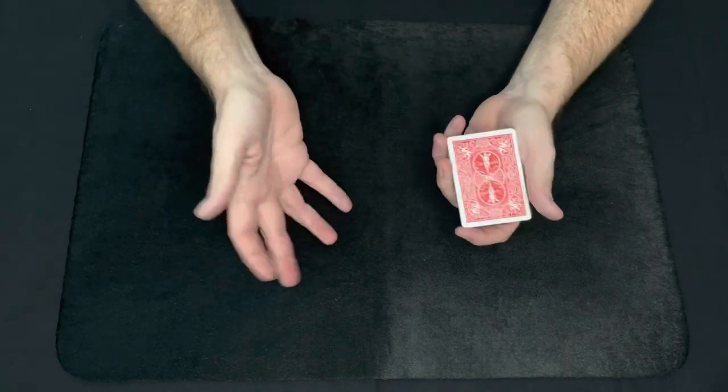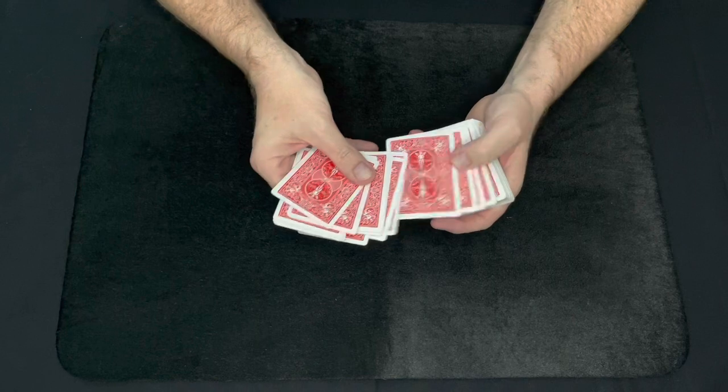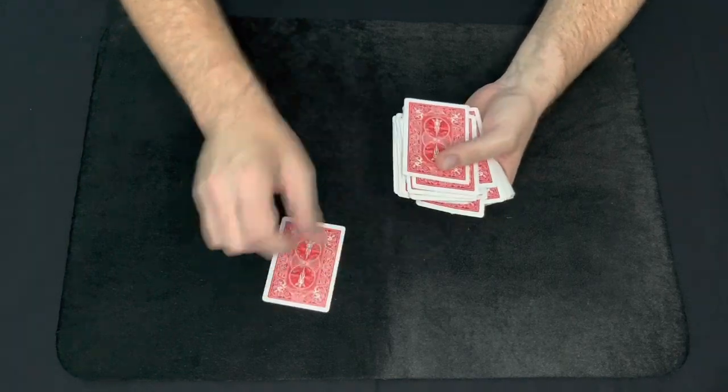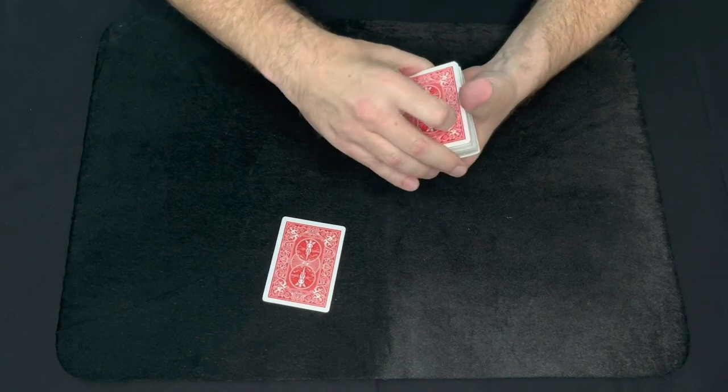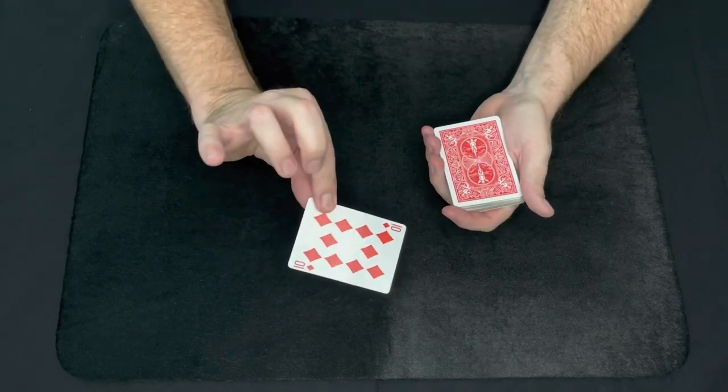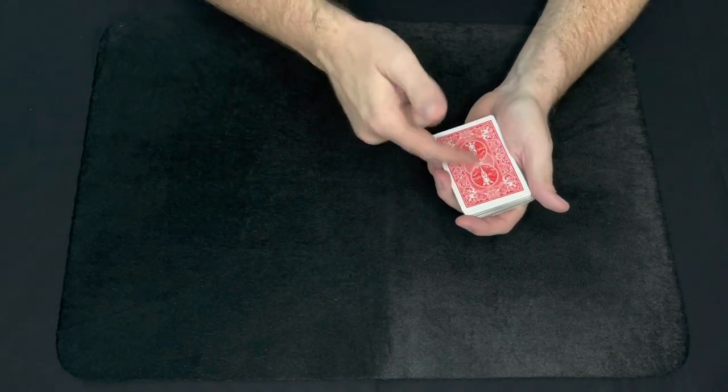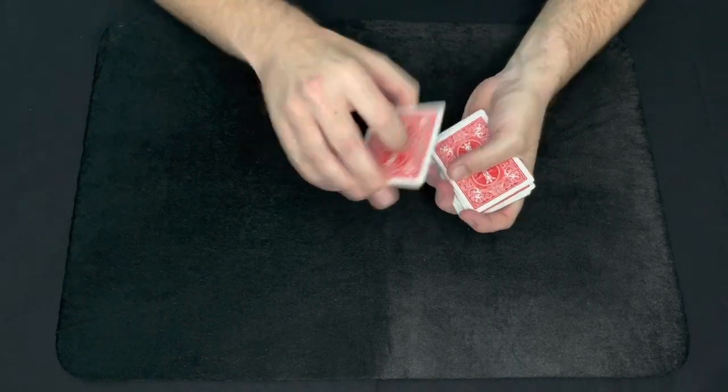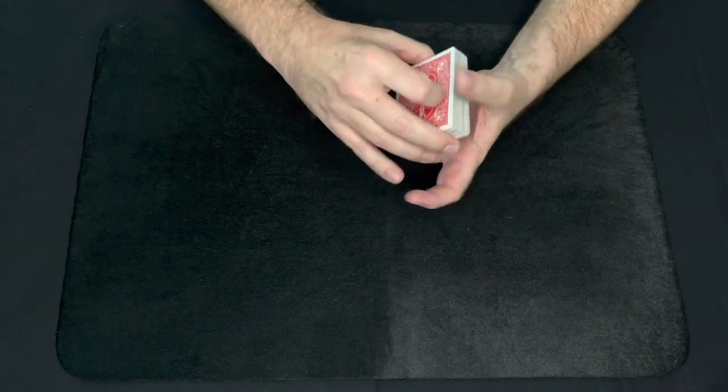Okay, so you have a regular deck of cards, it's shuffled, well mixed. Have a spectator select any card they like and it is a true and free selection. They don't show you but they look at it, remember it. You take their card and just place it on top of the deck.